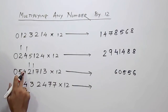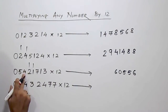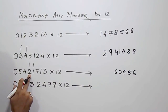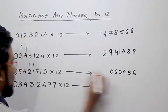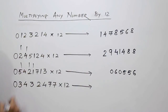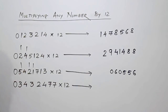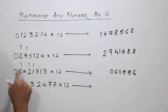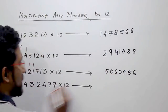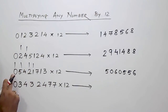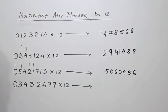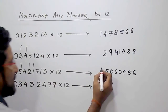Next one — 4's double is 8, 8 plus 2, that is 10. So we'll write 0 here and carry forward 1. Then next is 5 — 5's double is 10, 10 plus 4, that is 14 plus 1, it will become 15, so 1 will carry forward. Now 0's double is 0, 0 plus 5, that is 5 plus 1, that will be 6.